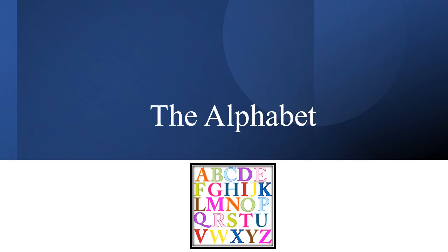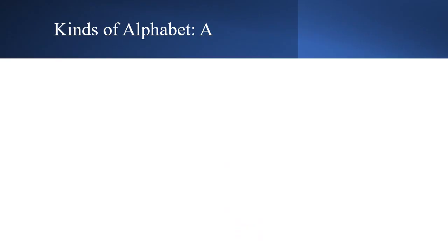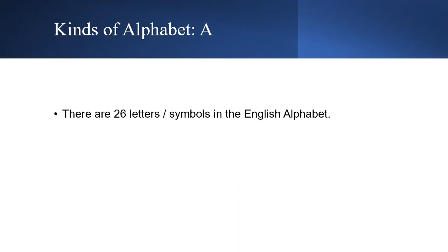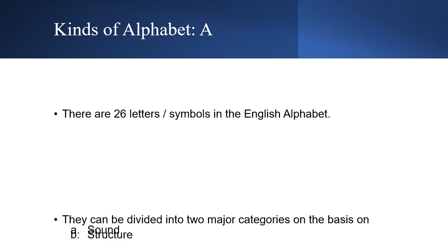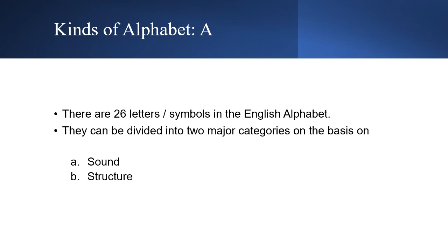You will see the problem now. We need to understand that there are different types or categories of alphabet. There are 26 letters or symbols in the English alphabet, and they can be divided into two major categories: based on sound, and based on structure.